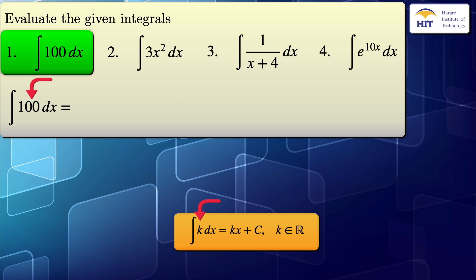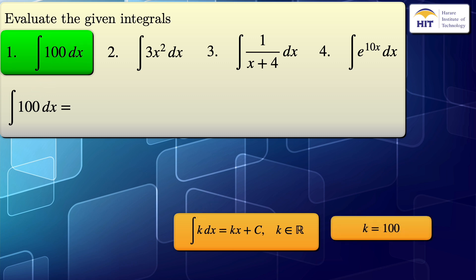By comparison, we can see that our k is equal to 100. Substituting this k into the formula, our result will be 100x plus c, where c is the constant of integration.